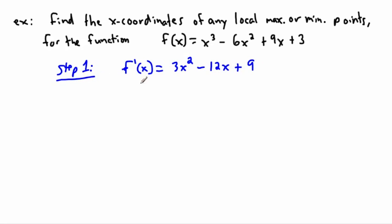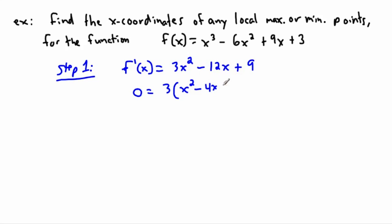Now I set that equal to zero. I can factor this — I can take out a common factor of 3. So that gives me 3(x² − 4x + 3) = 0, which makes it a bit easier to work with.